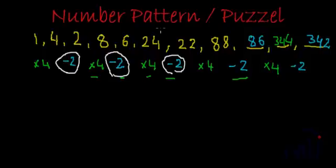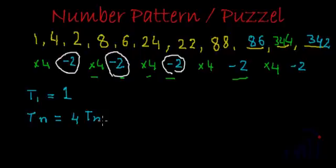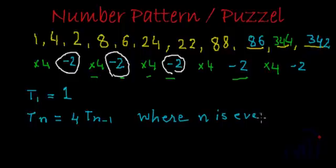Now let's try and write it in general notations. So again, let's fix the first term. T1 is equal to 1. And Tn is equal to 4 times Tn minus 1 where n is even. All the even terms are actually 4 times their previous term.